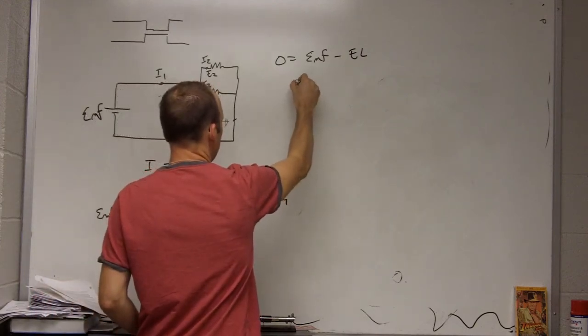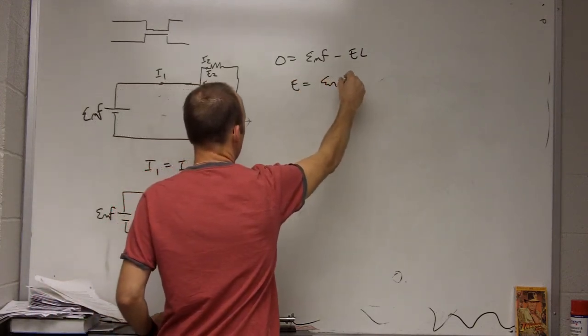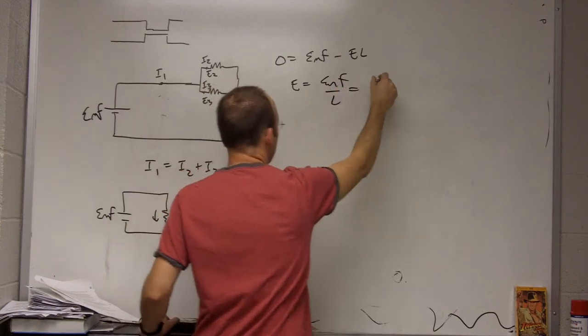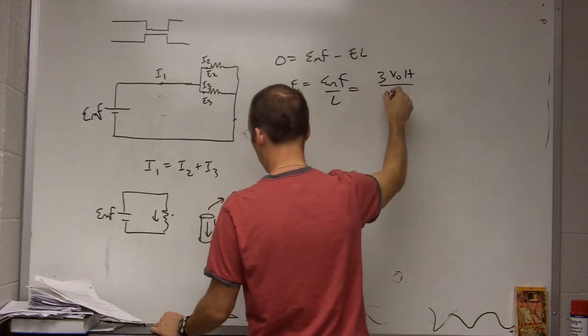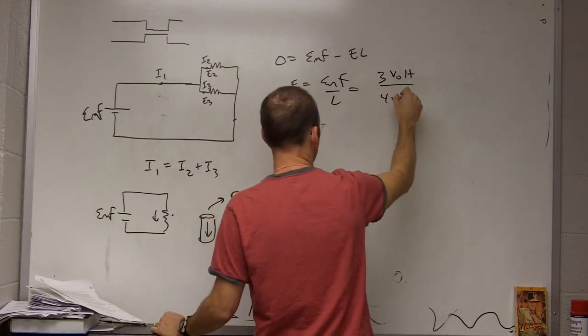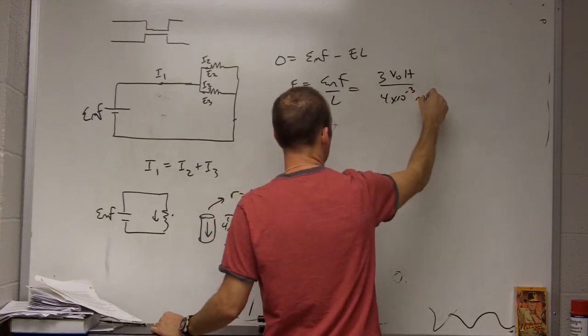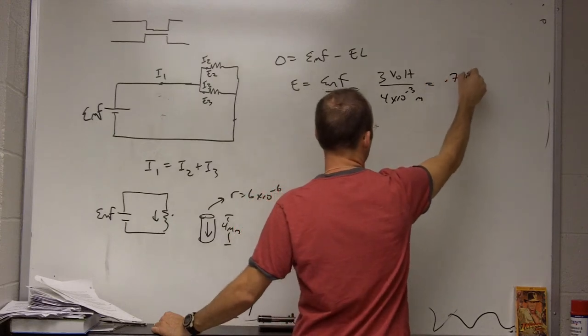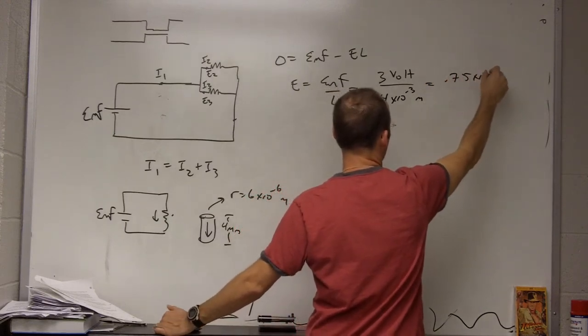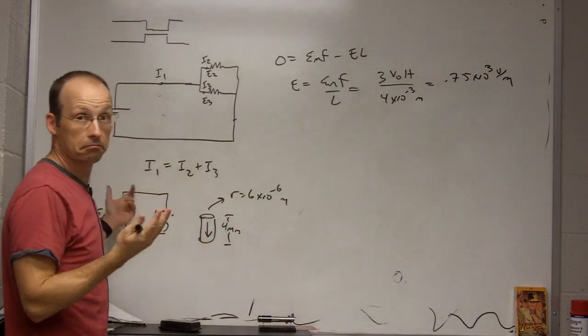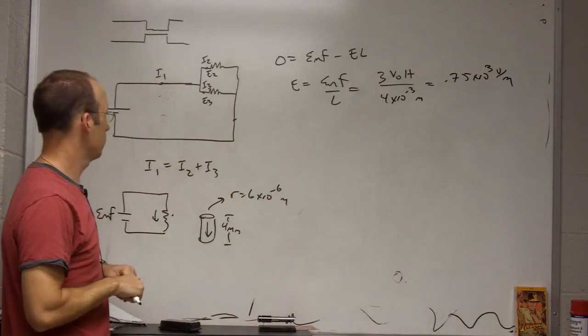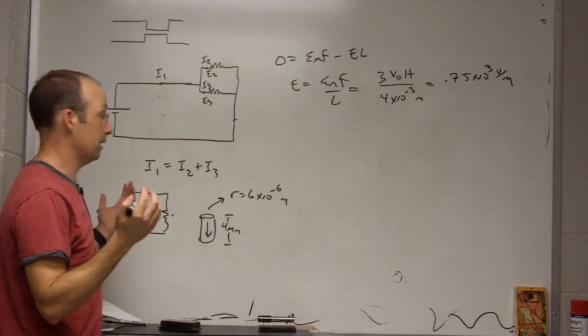So how would I find the electric field? Well, I just go, the electric field is going to be EMF over L. So that's going to be 3 volts of the 3, 2, 1.5 volt batteries, divided by the length of 4 times 10 to the negative 3rd meters. And so I get .75 times 10 to the 3rd volts per meter. And that's the electric field in here. That's the loop. That's it.